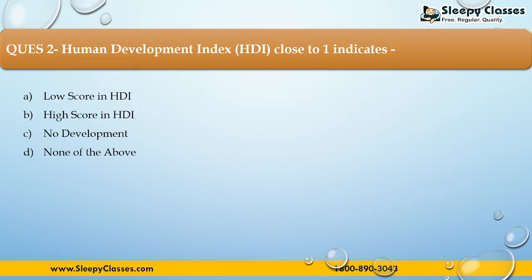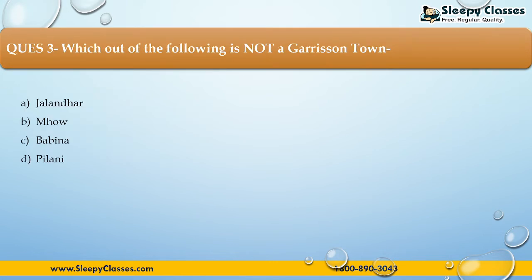The correct answer is option B — that is high score in HDI. When we talk about HDI, we consider scores from 0 to 1. Any state or country whose score is close to 1 has a high development rate, and one close to 0 has a lower development rate.